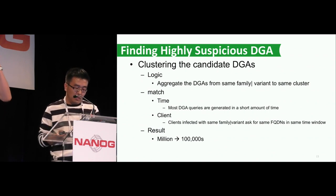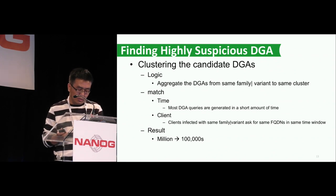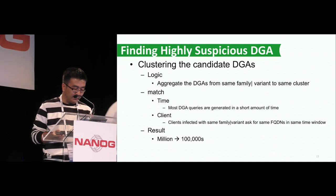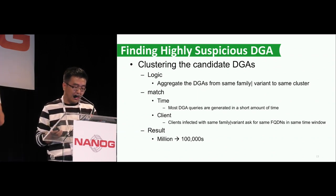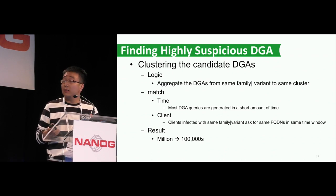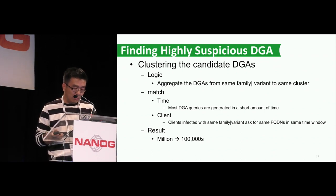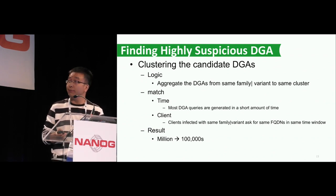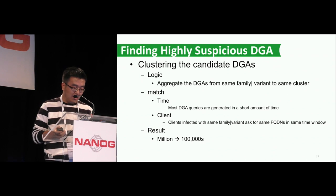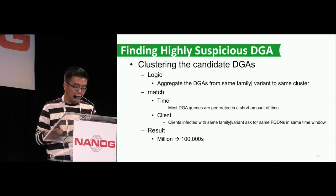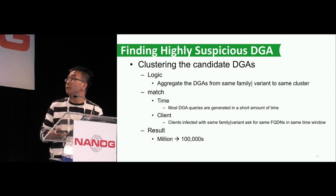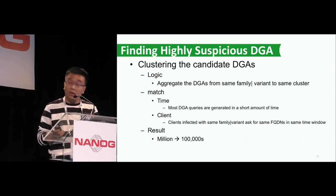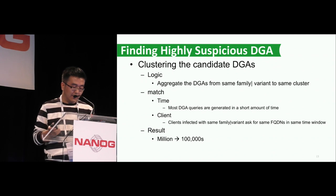So we have to get rid of the obvious noise, and then we go into the most important part: to cluster the DGA domains. The theory is simple — DGA domains generated by the same malware family should group together. There are two dimensions we can use. Dimension one is time: when malware runs, it will keep asking for DGA domains until it finds one that is resolvable. Dimension two is client: clients infected with the same DGA family should ask for the same domain names in the same time window. After this step, the amount of data we need to focus on is greatly reduced.